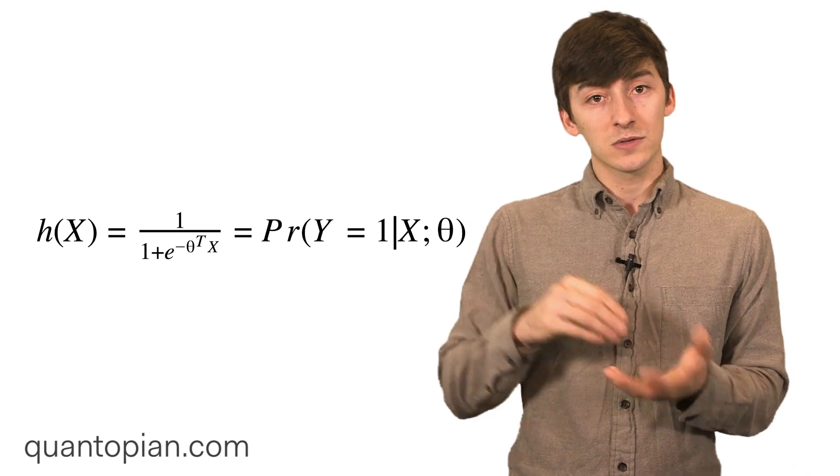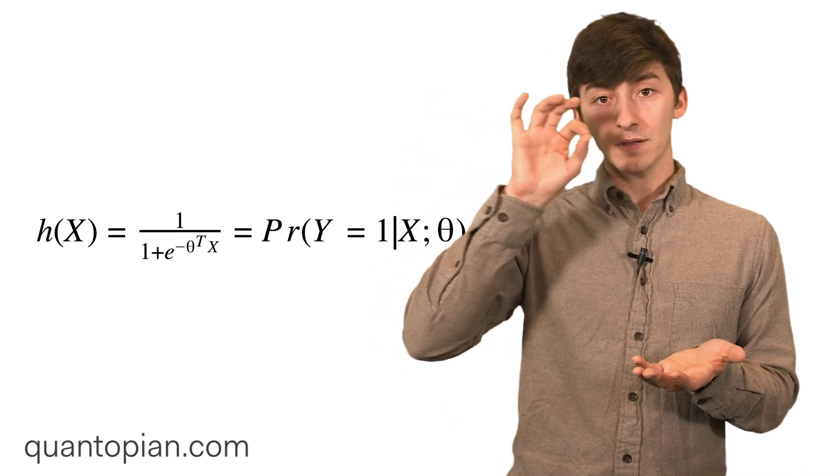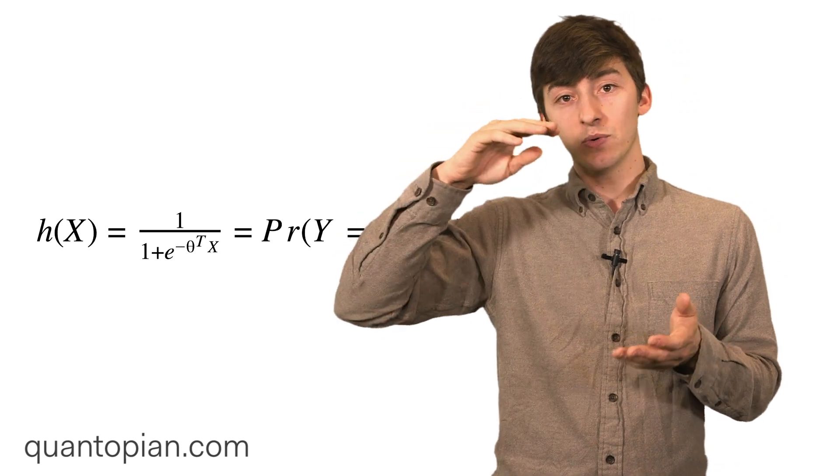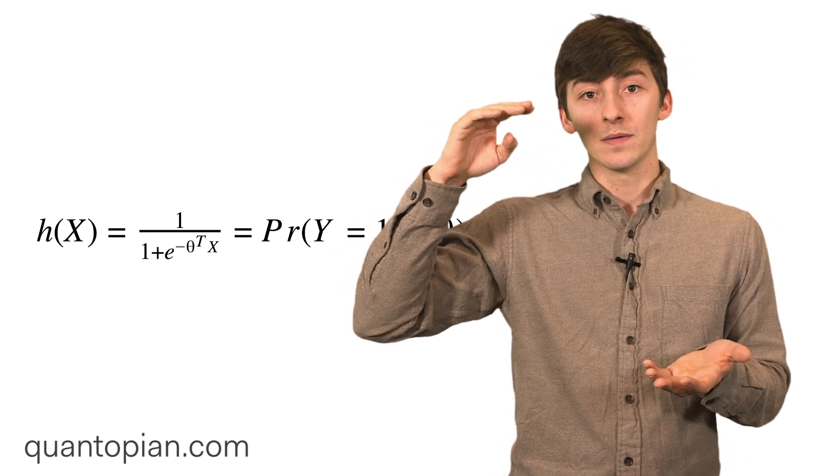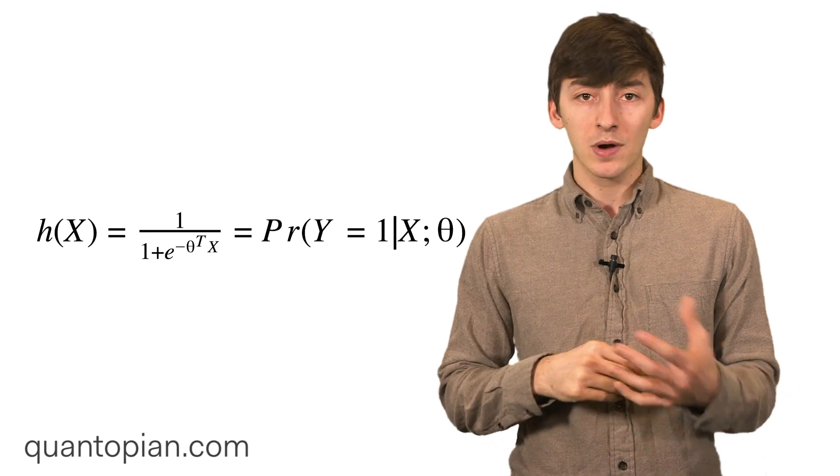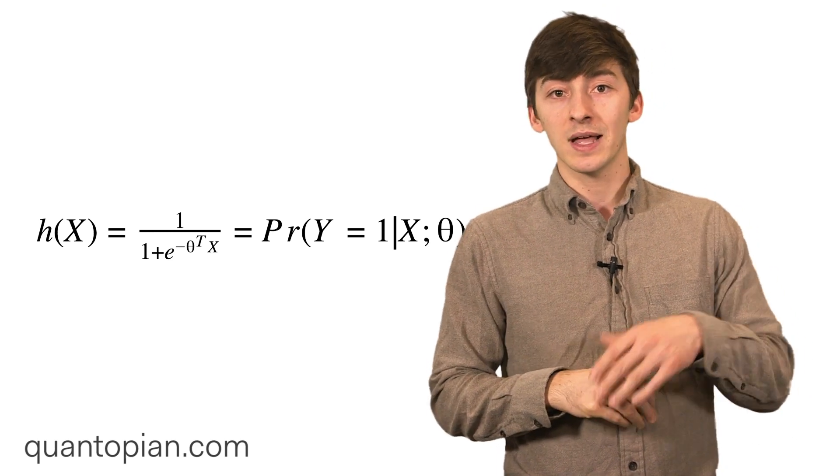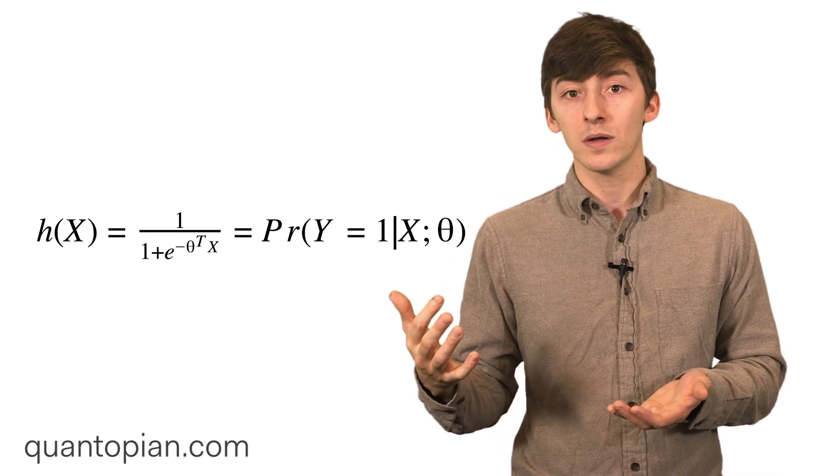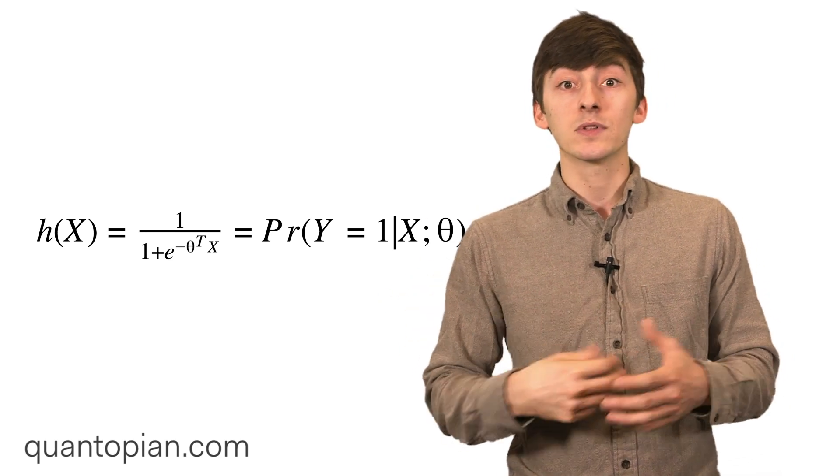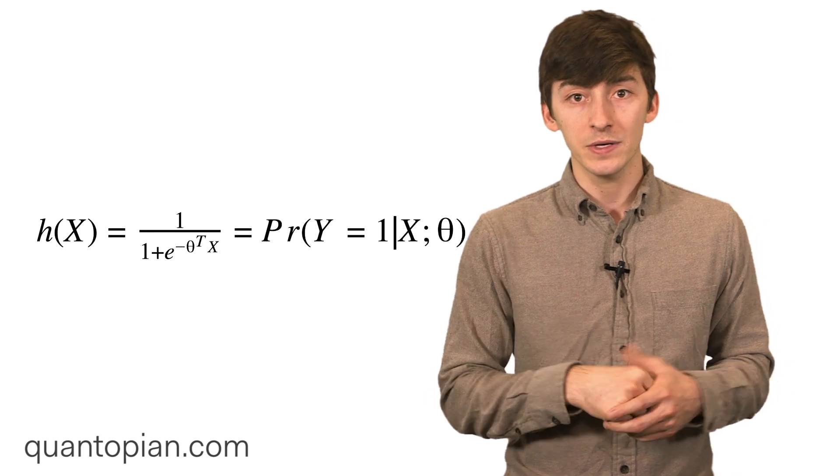The logistic function squashes the output of the linear model so that it remains between 0 and 1. Effectively the output of a logistic regression is a probability value of whether our inputs belong to class 0 or class 1, or whatever arbitrary pair of classes that you decide to feed into the model.